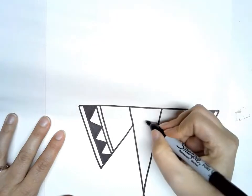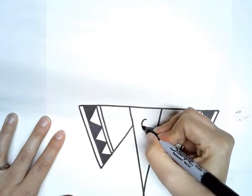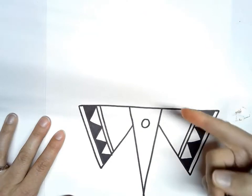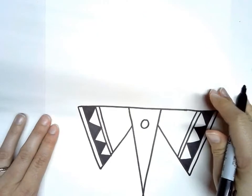And then to finish the bottom half we're going to make a circle right in the middle. And now we are going to work on the top half of the dragonfly design.